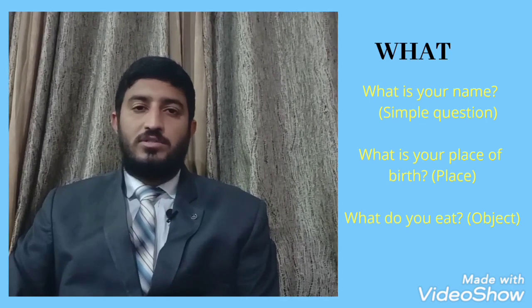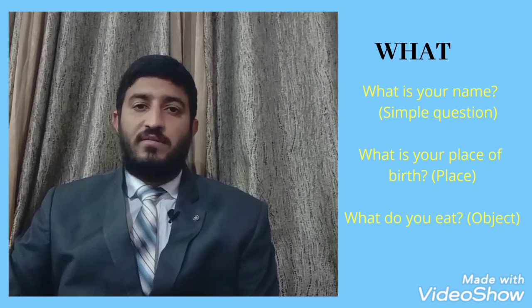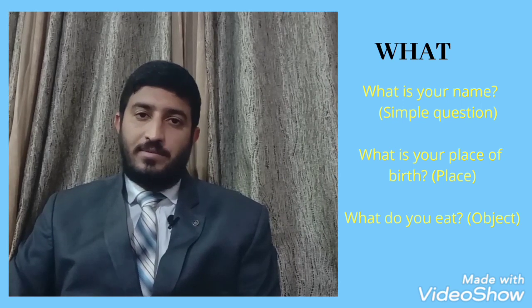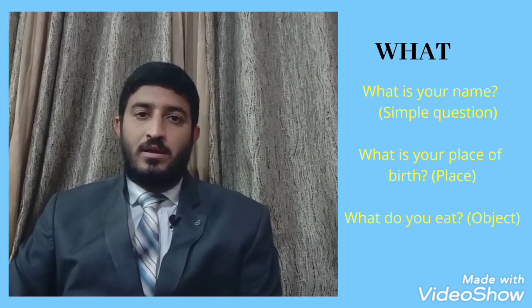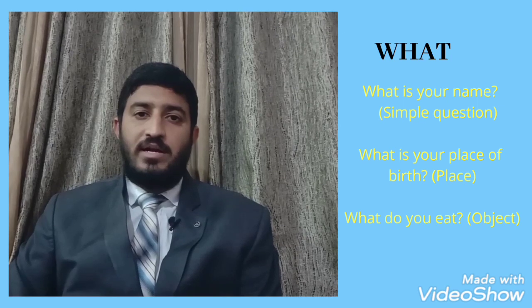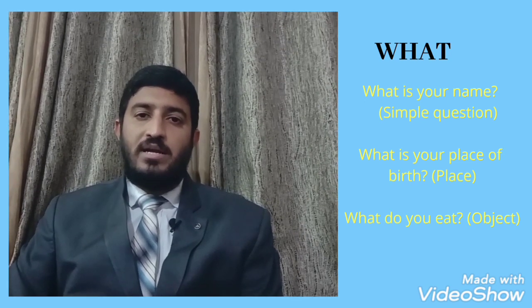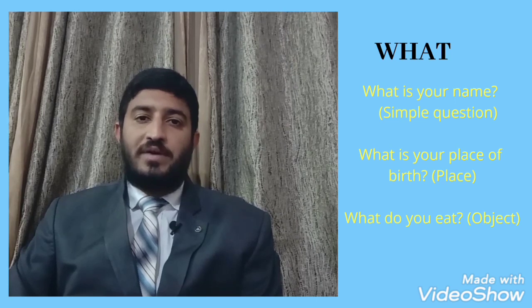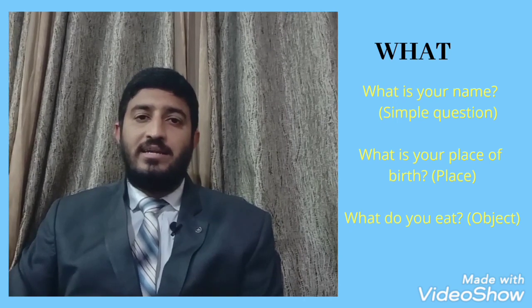Here we are with the other words of the WH family. 'What' is called the most flexible word of the WH family, as it can be used in a variety of ways. For example: 'What is your name?' — 'My name is so and so.' 'What is your place of birth?' — 'My place of birth is Delhi.' In the second sentence, 'what' is used to find out the place. 'What' is sometimes also used to find out the object — for example, 'What do you eat?' — 'I eat rice, I eat chapati,' etc.